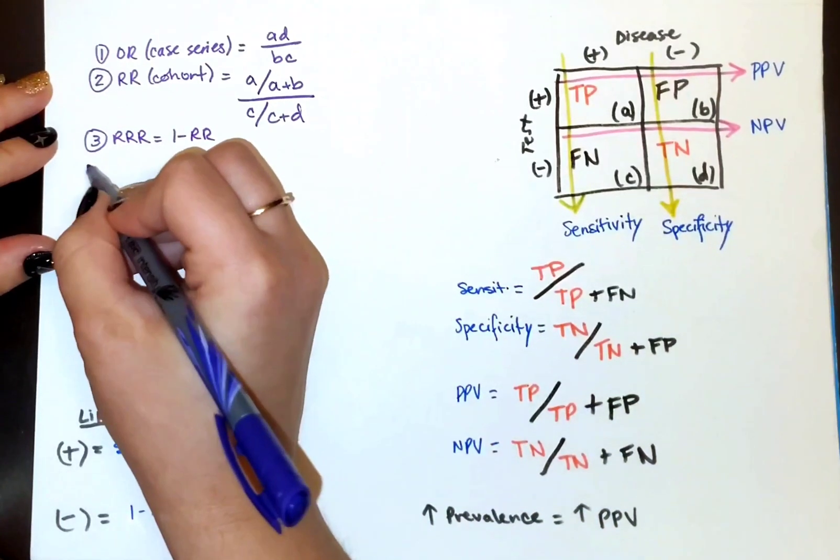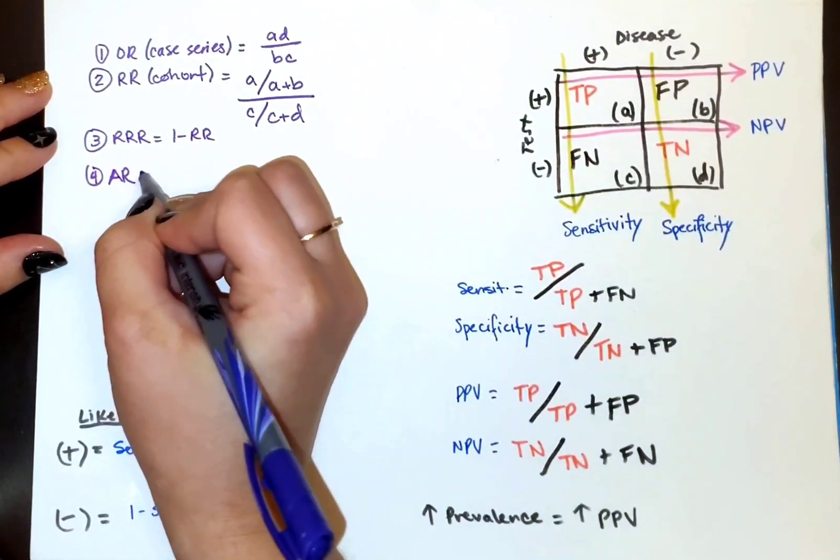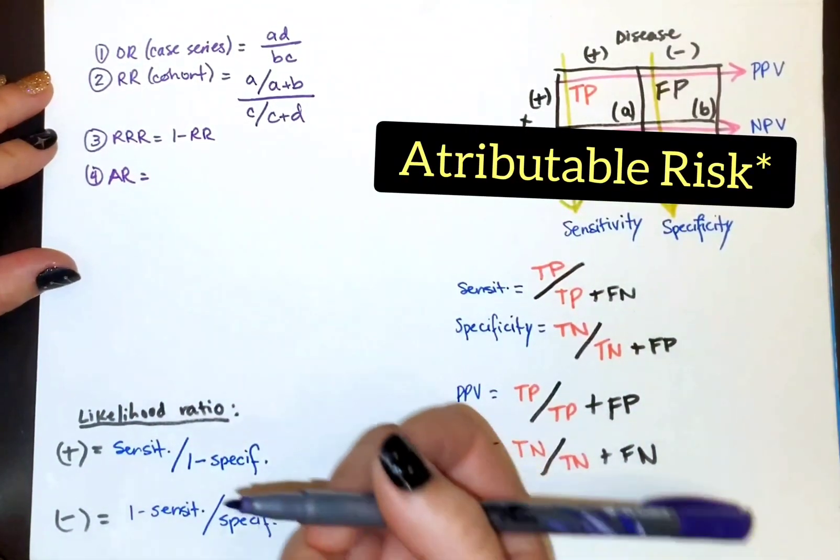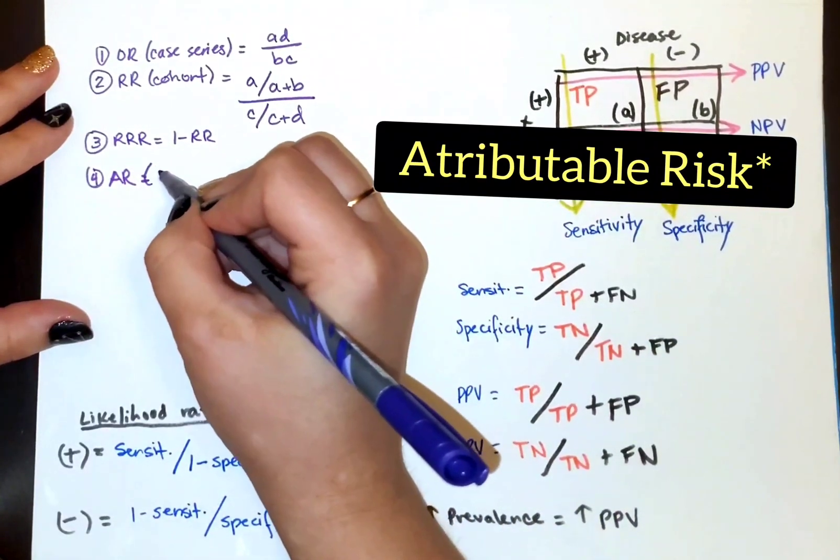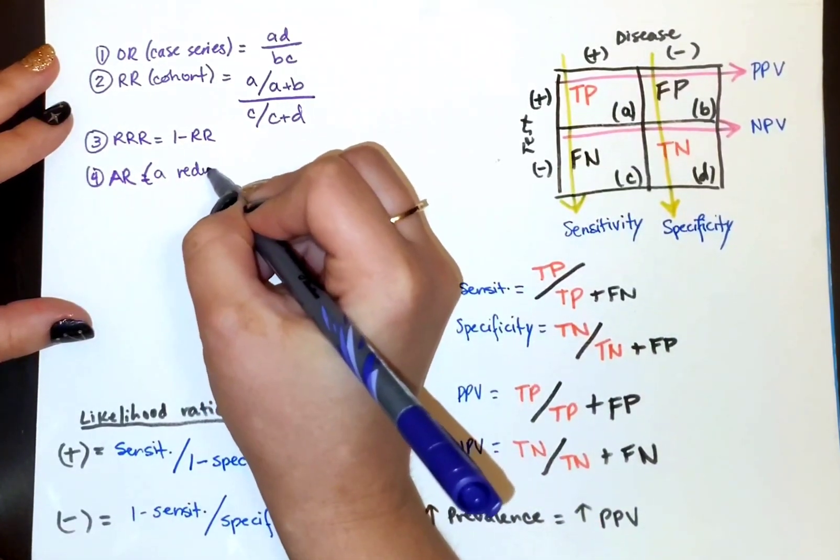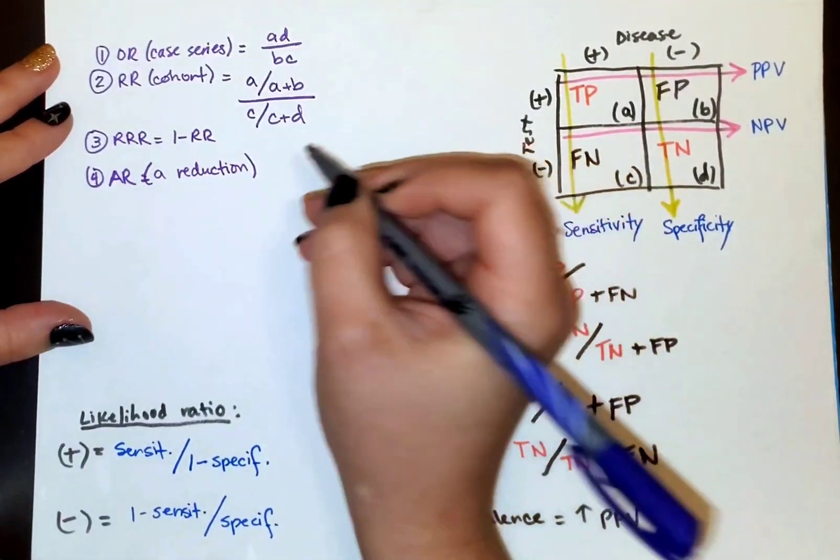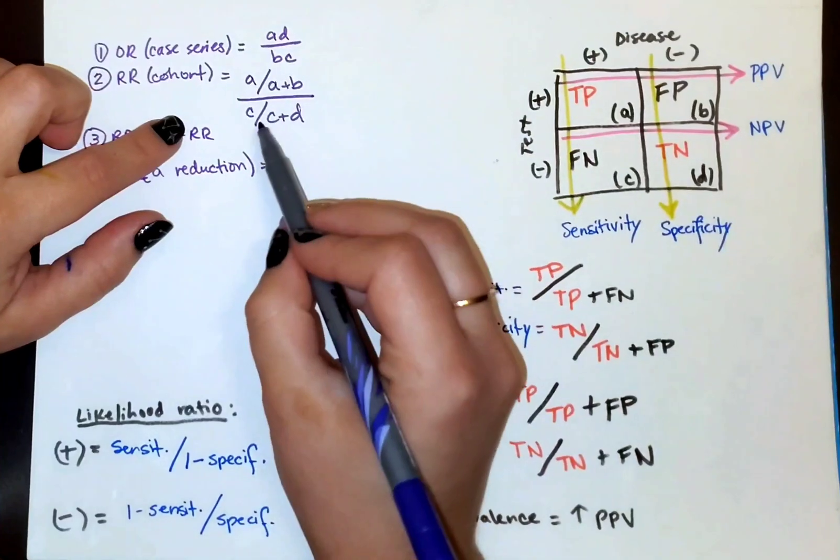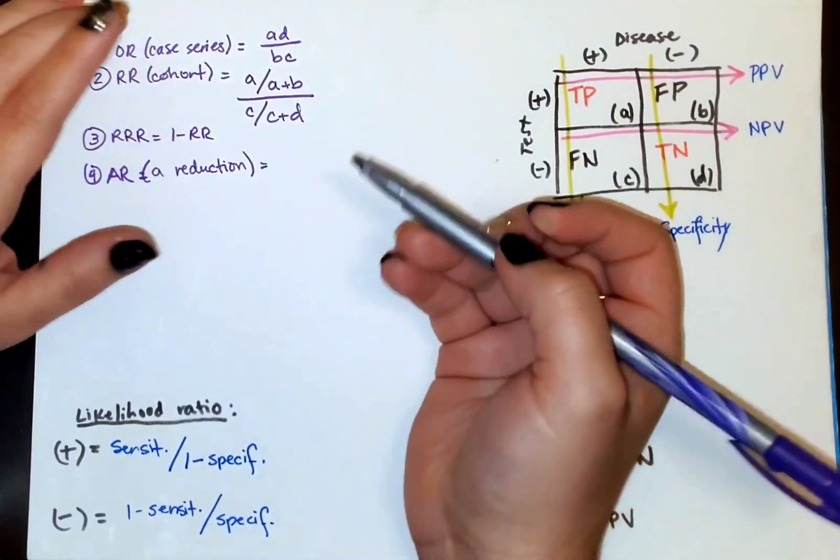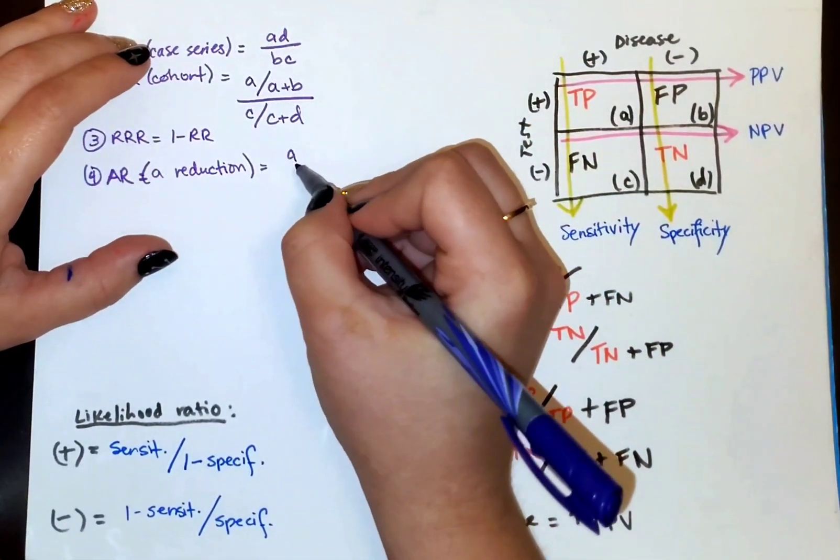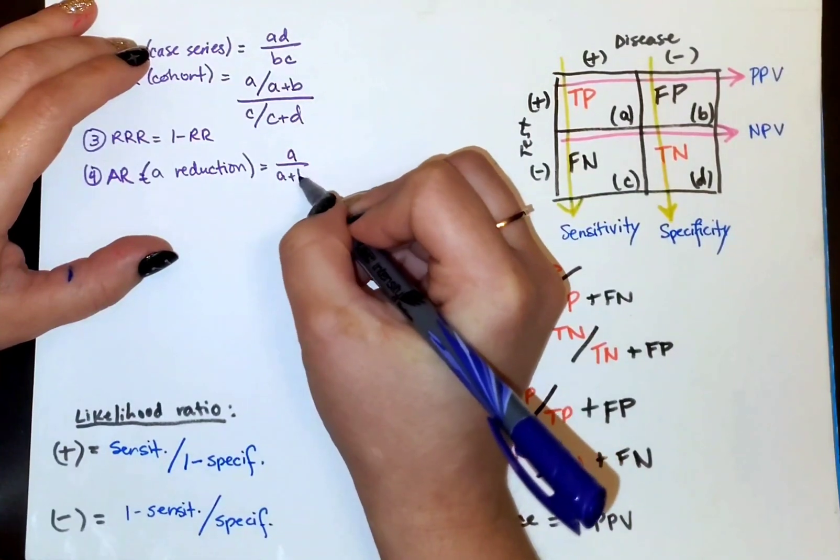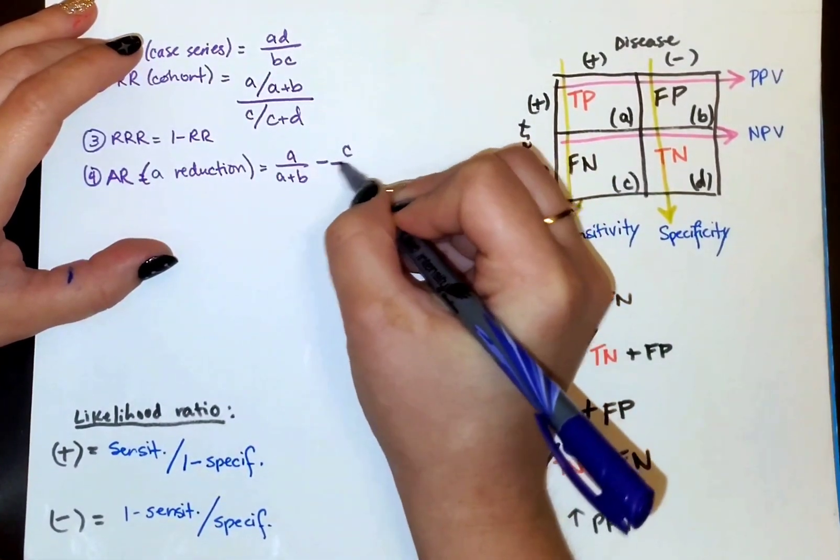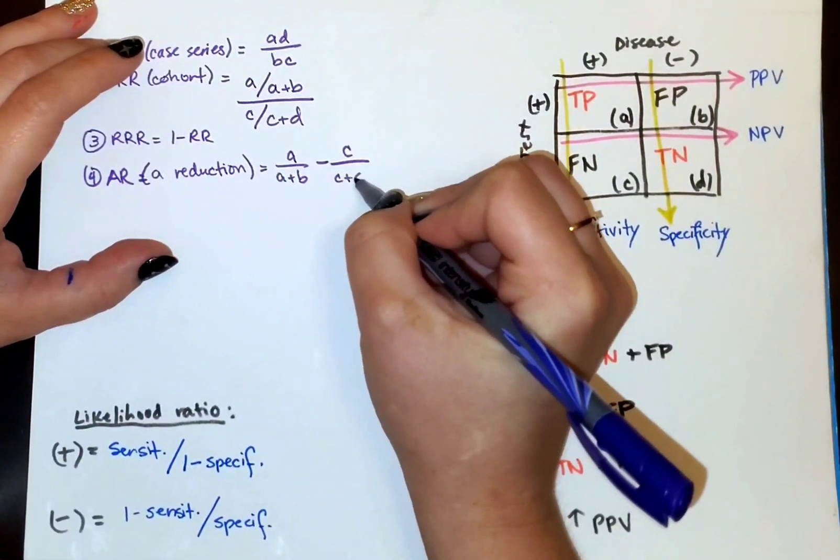Now we have absolute risk. Absolute risk, I just kind of see it like a reduction. So I'm subtracting, right? And I just kind of base it off of this. So I take the top and instead of dividing, I just subtract. So I go a over a plus b minus c over c plus d.